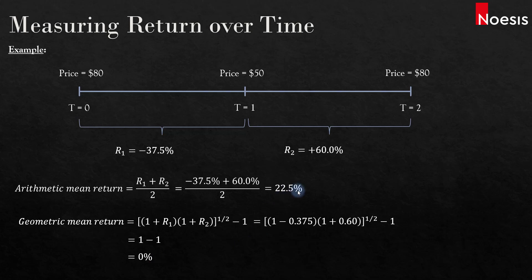One is 22.5% and the other is 0%, so which is correct? If we use the same formula to calculate the return from start to end, the return over those two years would be ending price 80 minus beginning price 80, divided by beginning price 80, times 100%, which equals 0%.